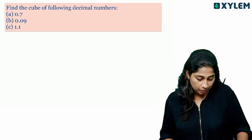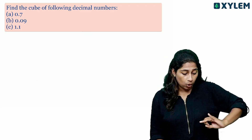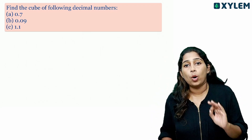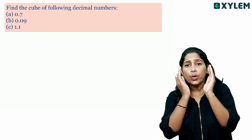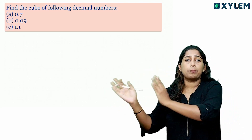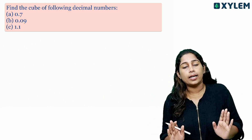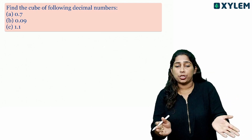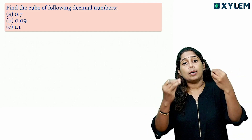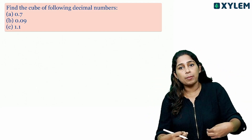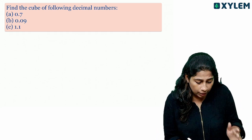Find the cube of the following decimal numbers. The first question is 0.7, the second one is 0.09, and the third one is 1.1. If you know multiplication, you can find the cube easily.